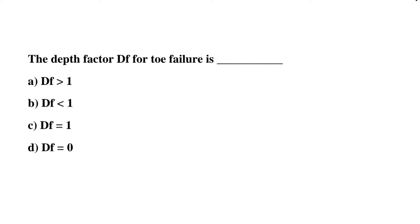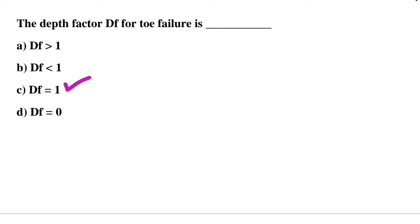Next question: the depth factor DF for toe failure is — Option A: DF greater than 1, Option B: DF less than 1, Option C: DF equal to 1, Option D: DF equal to 0. The correct answer is Option C, DF equal to 1.